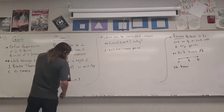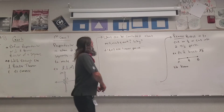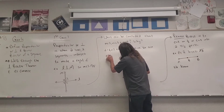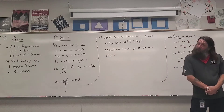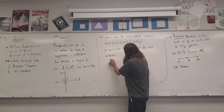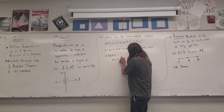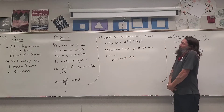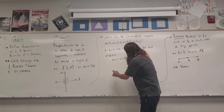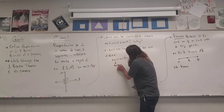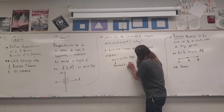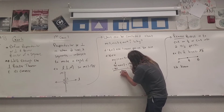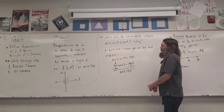Angle one and angle four are also a linear pair. A linear pair means that they add to 180 degrees. So I can say the measure of angle one plus the measure of angle two is equal to 180 degrees. I know the measure of angle one is 90 degrees, so 90 plus the measure of angle two equals 180 degrees. I can subtract, and the measure of angle two must also equal 90 degrees.